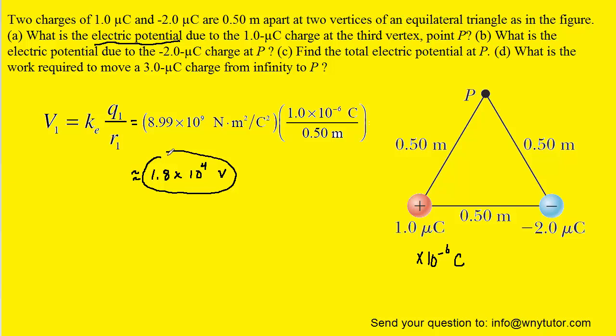For part B, it's very similar. We're just being asked to calculate the electric potential due to the other charge. So we're basically going to plug in the same things except for the charge. We're going to change that to negative 2 times 10 to the minus 6 coulombs.